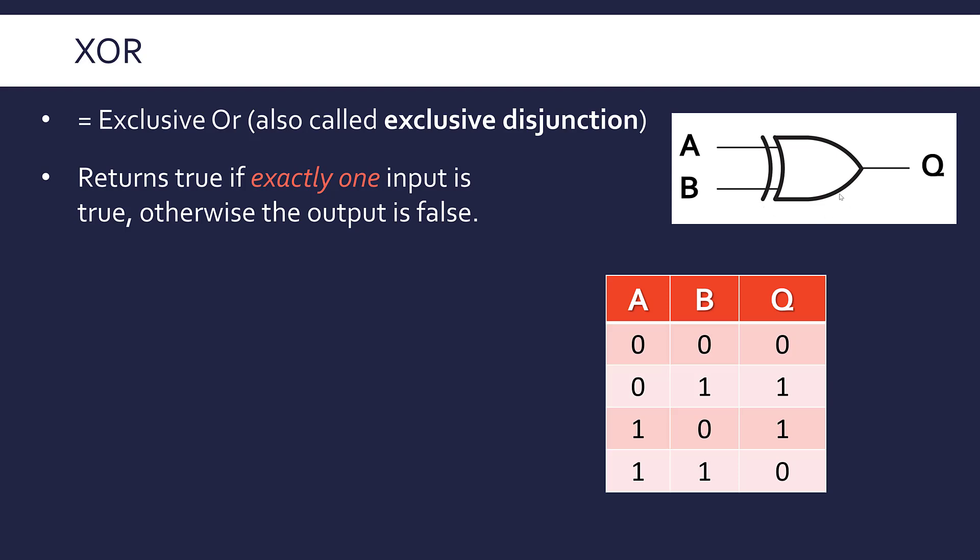XOR exists because the regular Boolean OR doesn't really reflect how OR is used in normal English. If I said to you, do you want a pizza or a burger for dinner? I don't mean pick both, which is what Boolean OR would allow. Boolean XOR is where it's really either/or — you've only got one choice out of the two; you've got to pick one of them for it to be true.